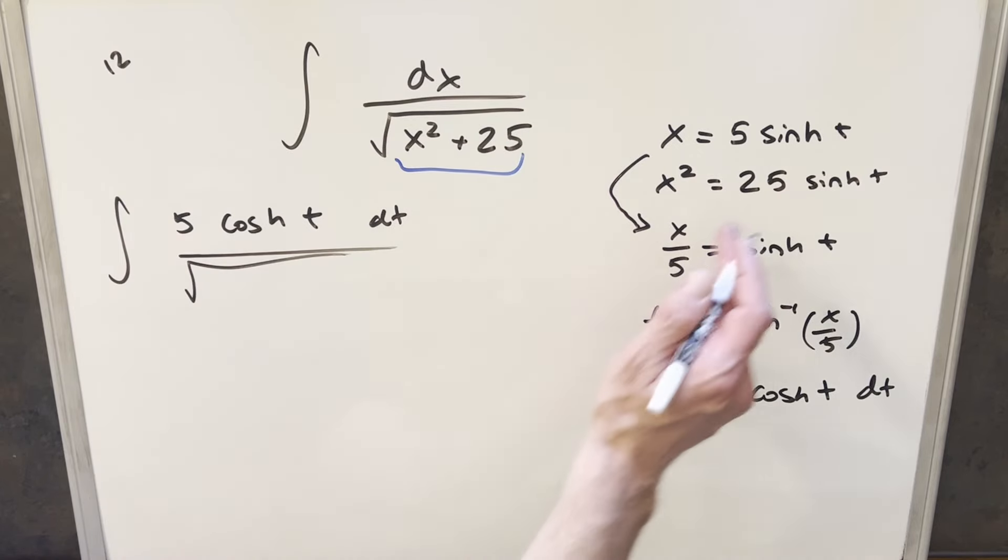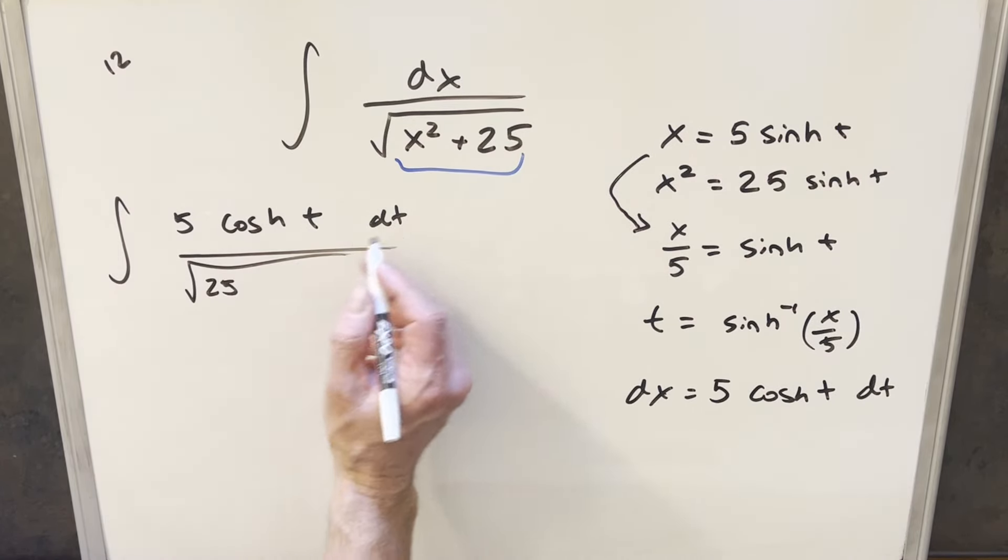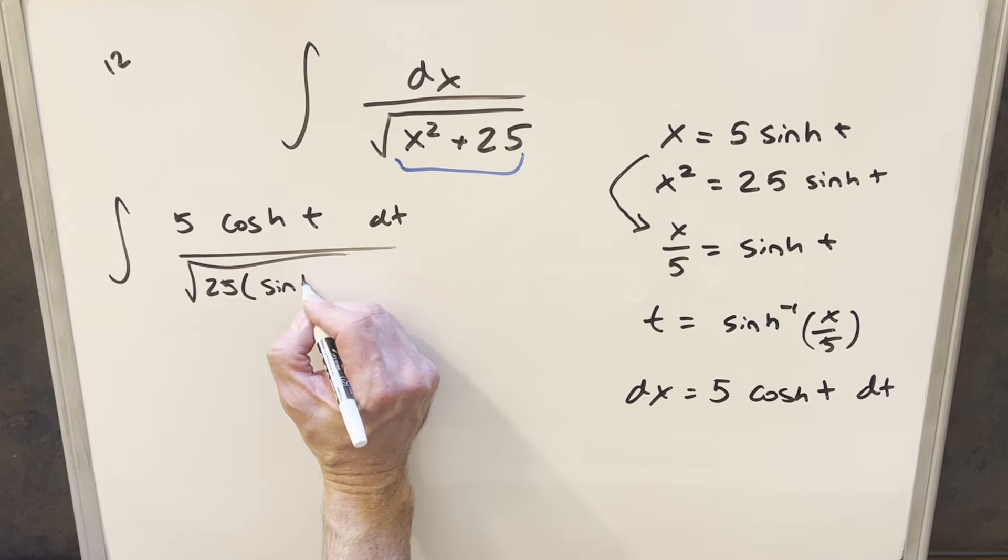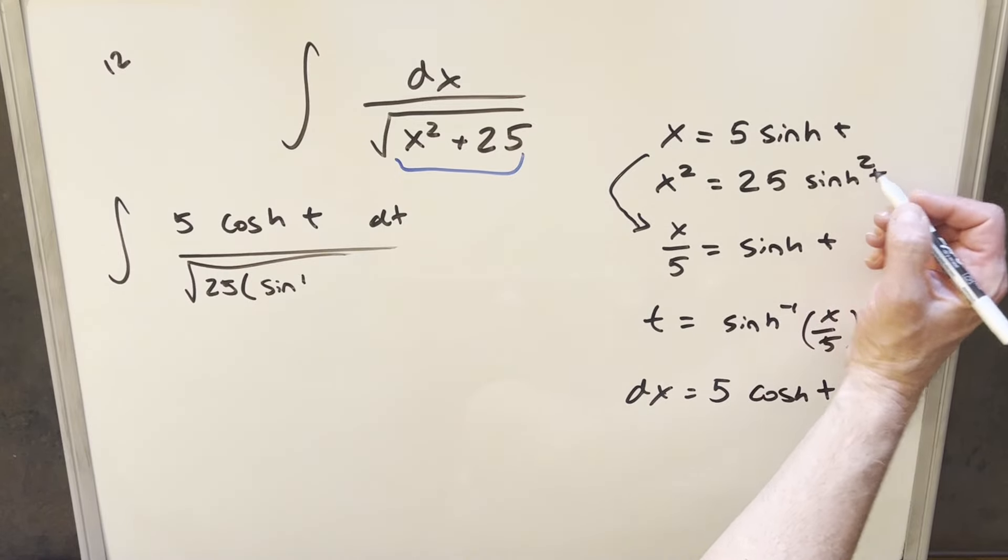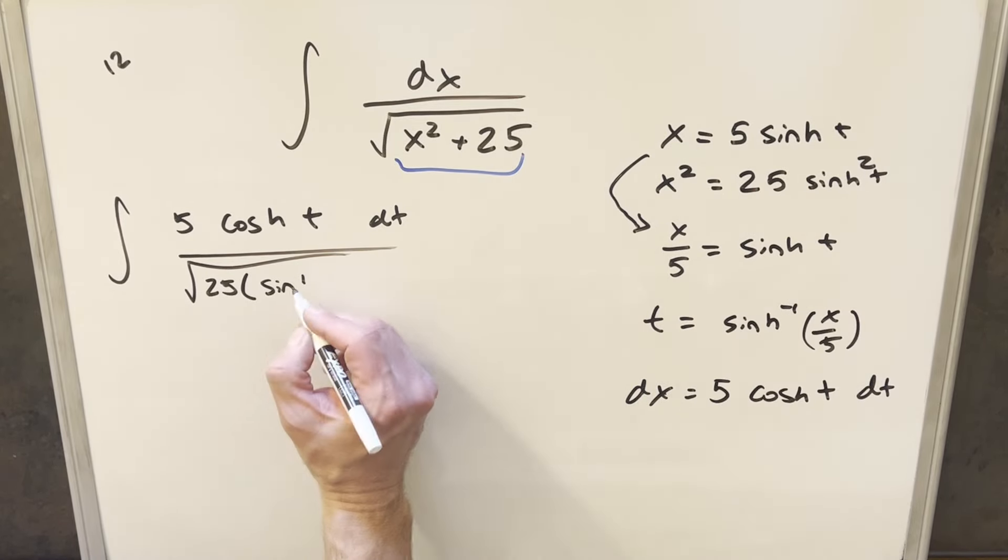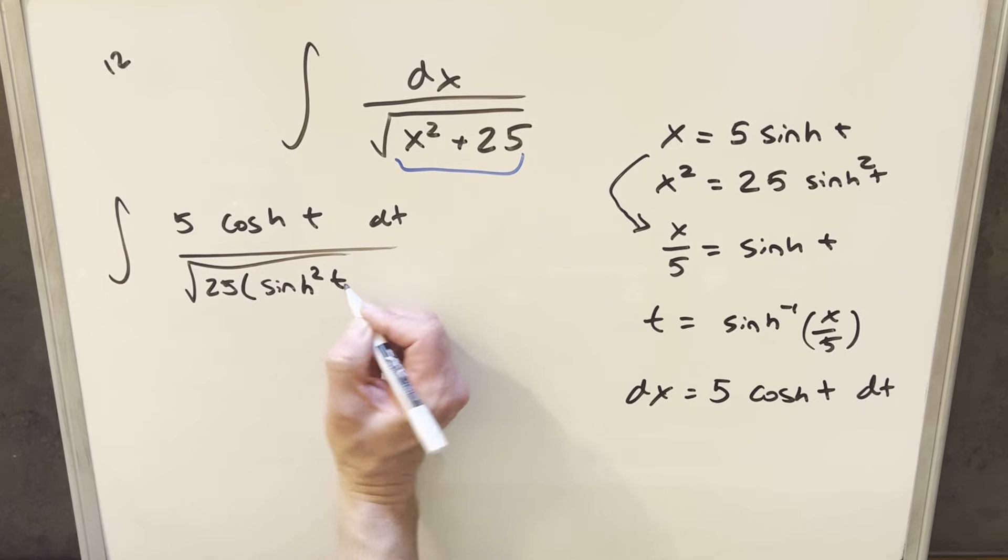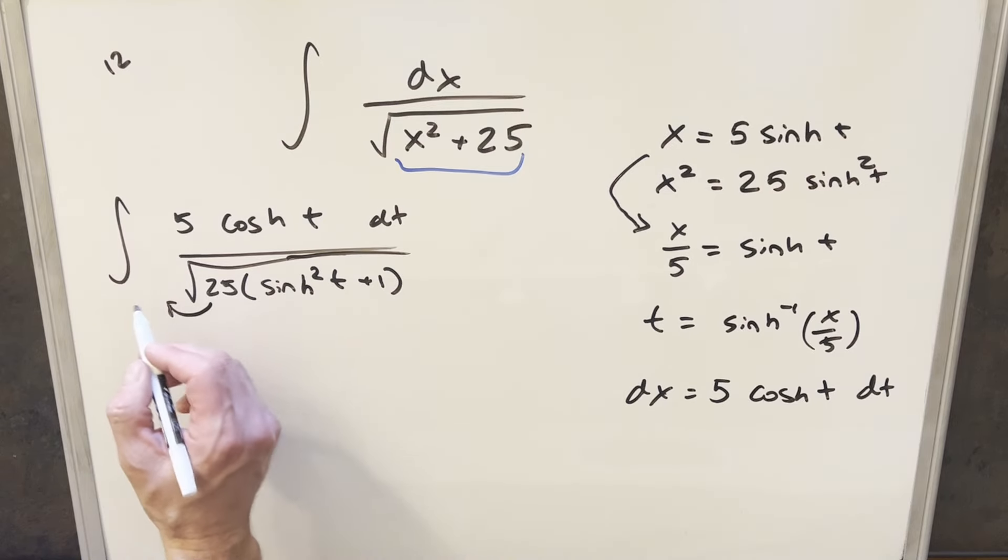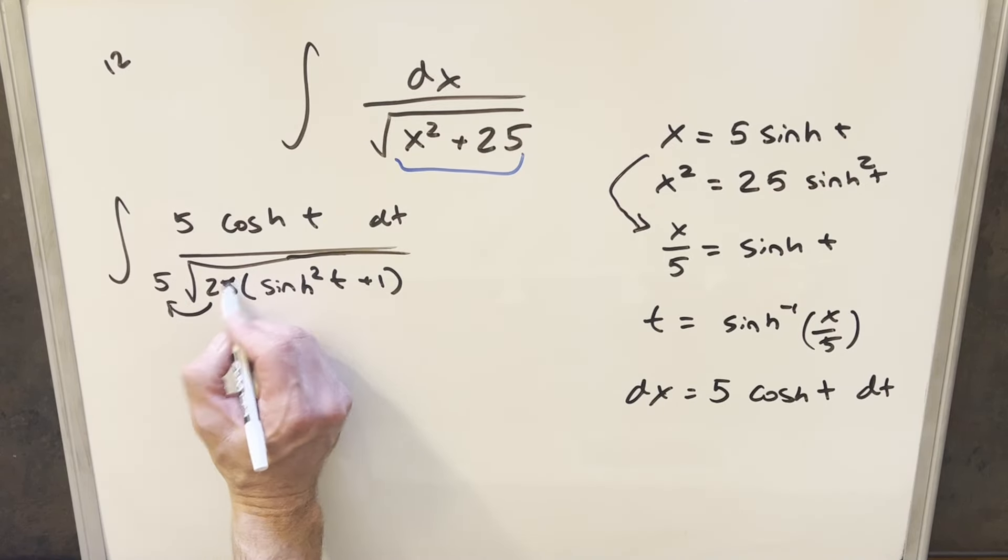And then here, we'll have this value for x squared. So we're going to have 25, but what I'll do in one step, I'm going to factor out 25. So I can write this as 25 times—oh sorry, this should be squared here. Just made a mistake. So squaring x here, we get sinh squared t. So this is going to be sinh squared t here. And then with the 25 factored out, this becomes a plus 1. But then we'll take this 25, take the square root of it, and we get 5 to bring outside. But then we'll cancel this with this here.